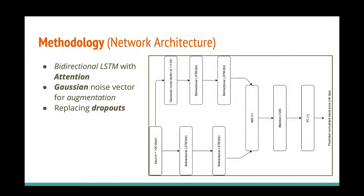This is the actual network architecture used in this experimental model: bi-directional LSTM with attention, as you can see in this picture. We know that noise always plays a significant role in the stock market. For that reason, I used a Gaussian noise vector for the augmentation process. The Gaussian noise vector is added to the data, and a separate branch of the network learns the noise version of the input data. You can see on the stock price graph there is a lot of noise. I did not use any dropouts — where some neurons are turned off — and instead chose Gaussian noise vector over dropout to better handle noise and ensure the model utilizes 100% of the network.